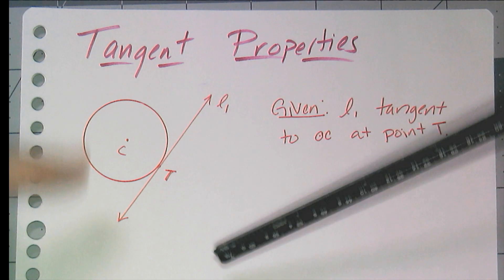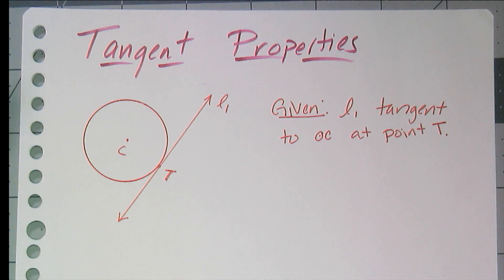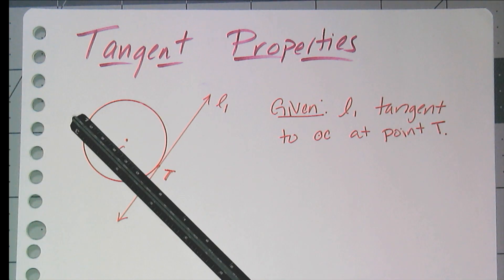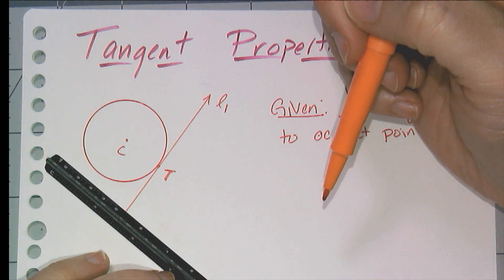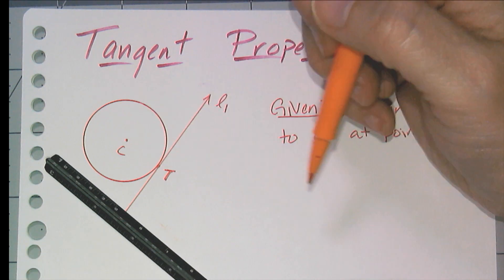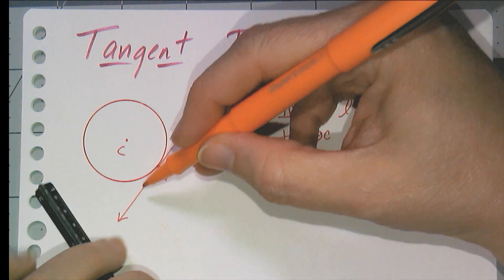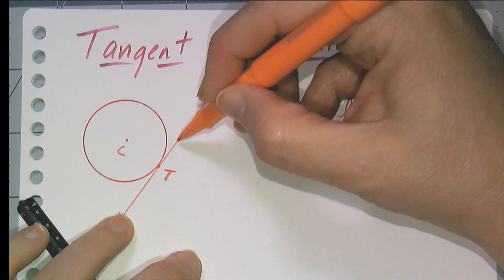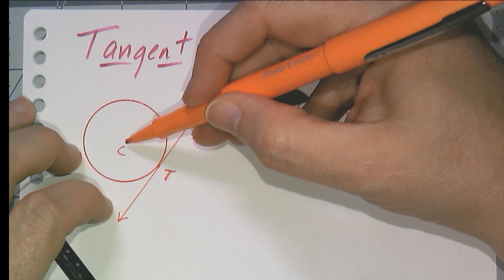And I want to know, are there any special properties with tangents and circles? And of course there are, or there would not be a video on them. So let's first think about the distance from the circle to the tangent. Now we know that the shortest distance from a point to a line has to be a perpendicular distance. And so if I think about putting a point anywhere on this tangent, except for the point of tangency, I'm going to get something longer than the radius.